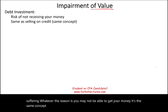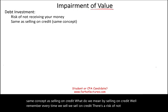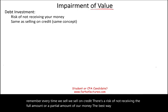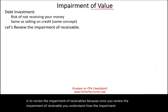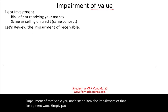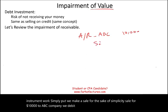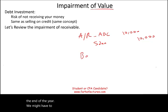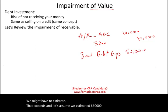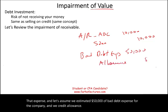This is the same concept as selling on credit — every time we sell on credit there is a risk of not receiving the full amount or a partial amount. The best way to start this discussion is to review impairment of receivables, because once you understand that, you understand how impairment of debt instruments works. For example, we make a sale for ten thousand dollars to ABC Company, debit accounts receivable and credit sales for ten thousand. At year end we estimate bad debt expense — say fifty thousand dollars — and credit the allowance for bad debt.